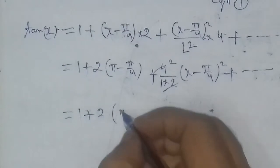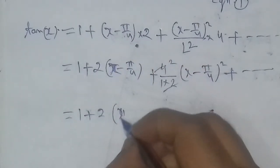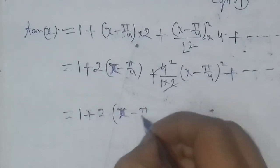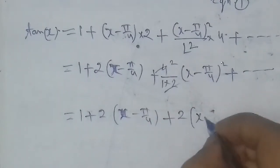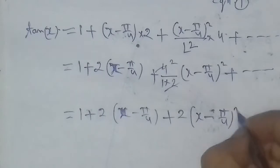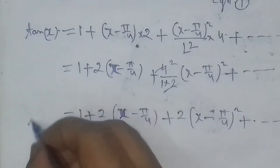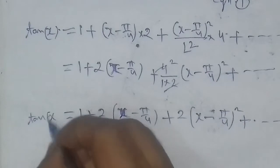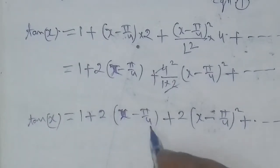Therefore, tan(x) equals 1 plus 2(x minus π/4) plus 2(x minus π/4)² plus higher order terms. This is the expansion of tan(x) in powers of (x minus π/4).